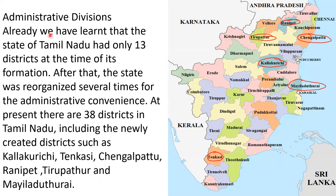Administrative divisions: The state of Tamil Nadu had only 13 districts at the time of its formation. After that, the state was reorganised several times for administrative convenience. At present, there are 38 districts in Tamil Nadu, including the newly created districts such as Kallakuruchi, Tenkasi, Chengalpattu, Ranipet, Tirupattur, and Mayiladuthurai.